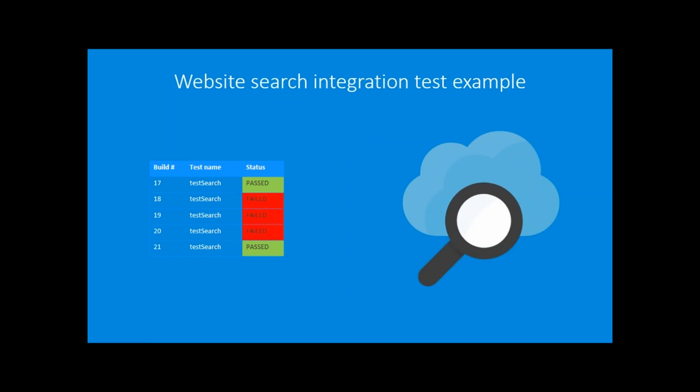Let's start with an example. Assume we have a web page — for example an e-commerce store — and the most important feature is the search bar. It's really critical for search to work, and of course we have an integration test for that. Everything is okay, and then somebody breaks it. The integration test fails for several subsequent builds, we ask the person who broke it to fix it, and the test is green again — so we deploy to production and boom.